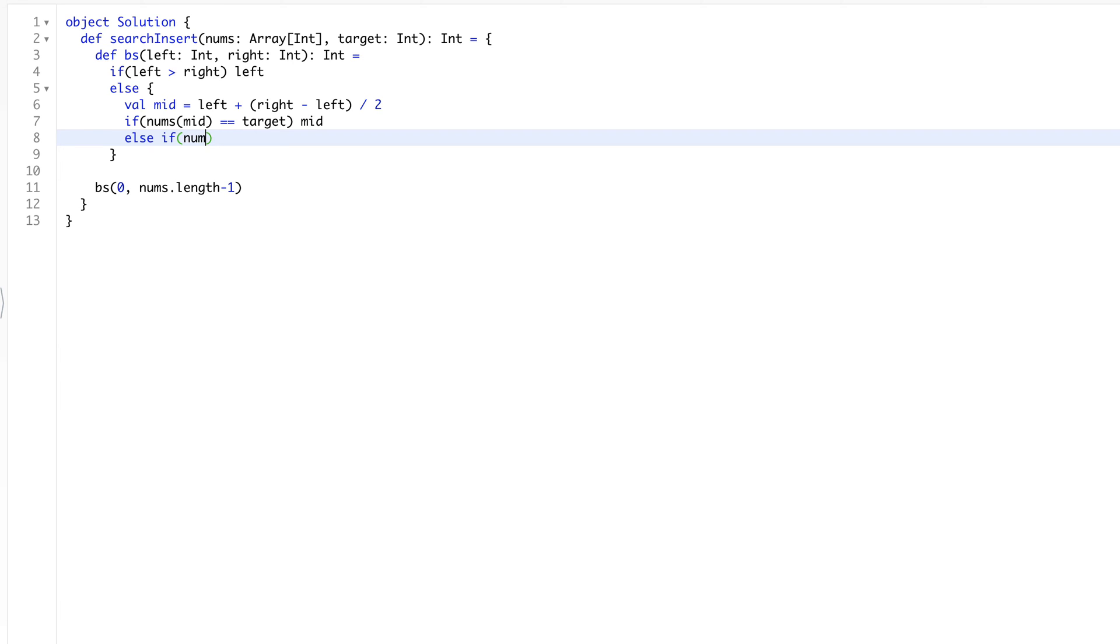And we see that nums[mid] is less than the target, so it means we have to find our answer on the right side of the array. So we will binary search again and we will say the left index will be mid plus one.